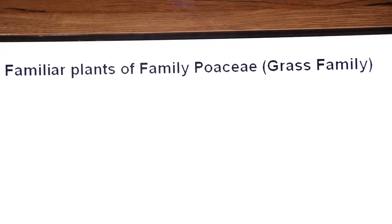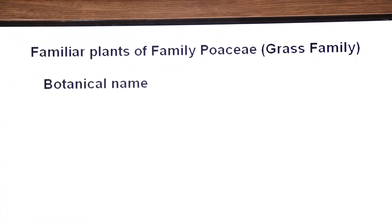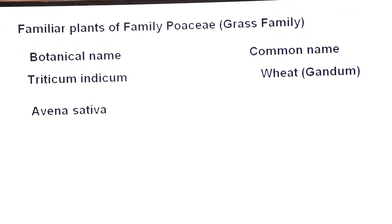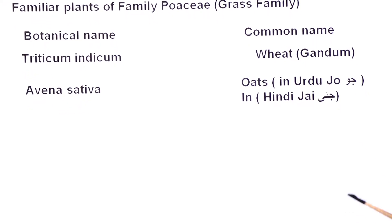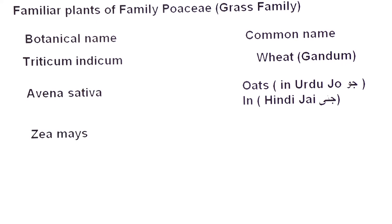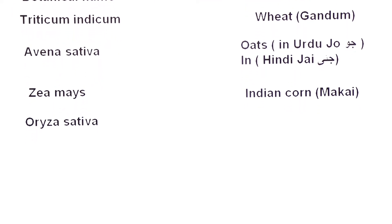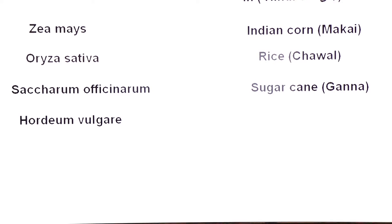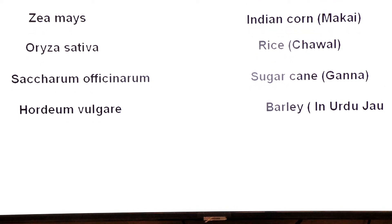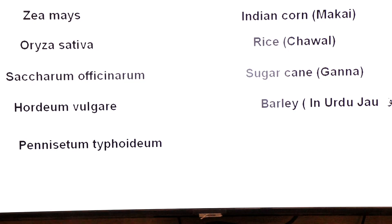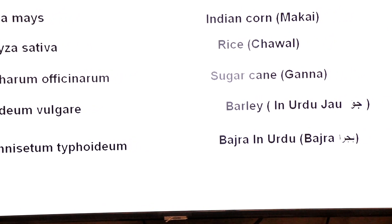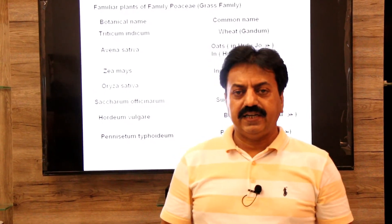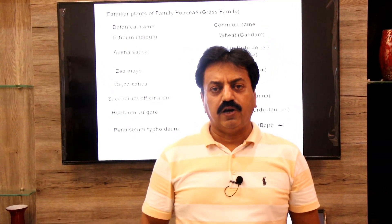The familiar plants of Family Poaceae (grass family): Triticum indicum — wheat (gandum); Avena sativa — oats (jo/jai); Zea mays — Indian corn (makai); Oryza sativa — rice (chawal); Saccharum officinarum — sugar cane (ganna); Hordeum vulgare — barley (jau); Pennisetum typhoideum — bajra (bajra). Thank you dear students, today we have completed Family Poaceae. Good luck!